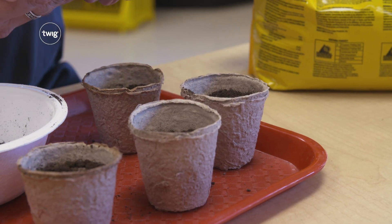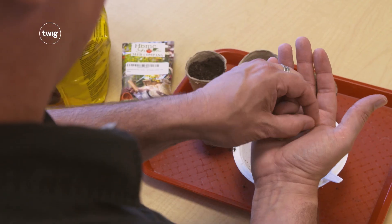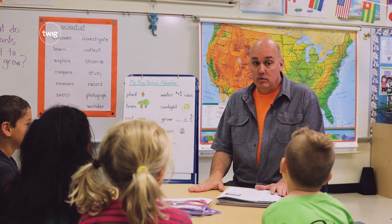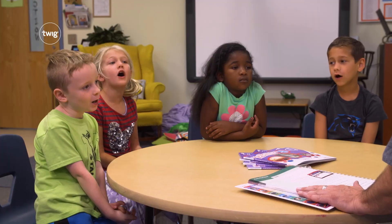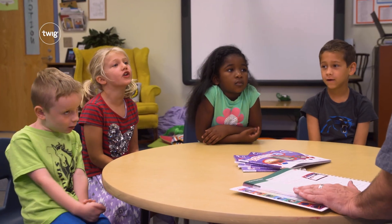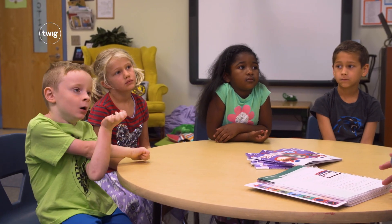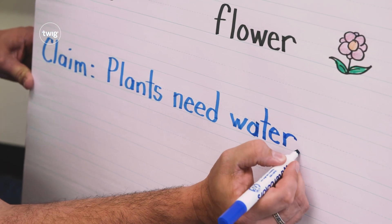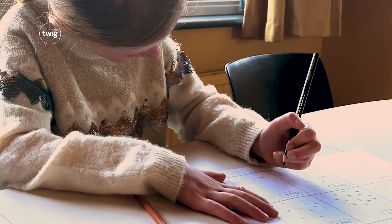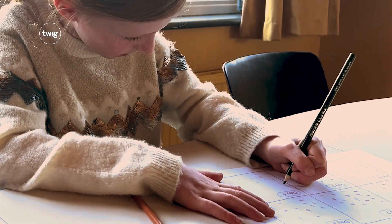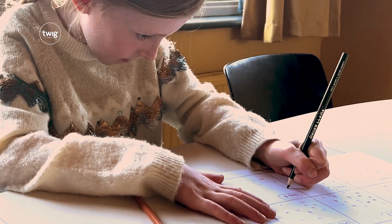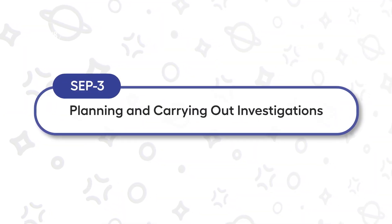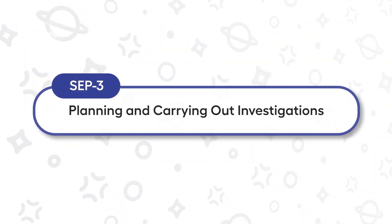In lesson three, students plant their seeds. When asked what plants need to grow, students respond with answers like 'Water!' and record their claim. Students record the growth of their seeds in a handout — in pre-kindergarten, this means drawing what they observe in their plants' pots at regular points.